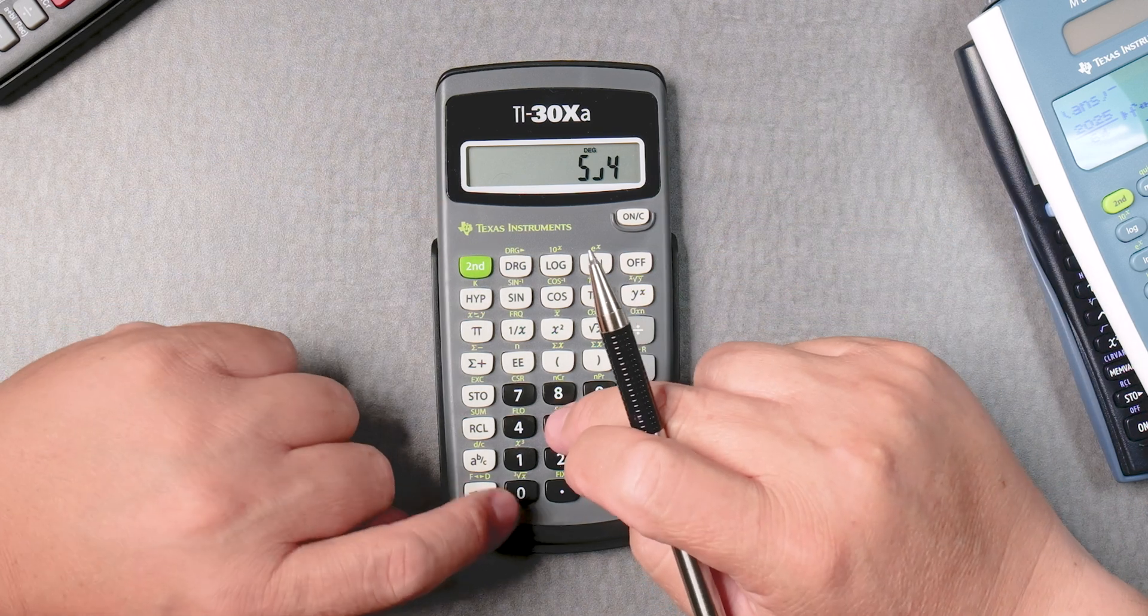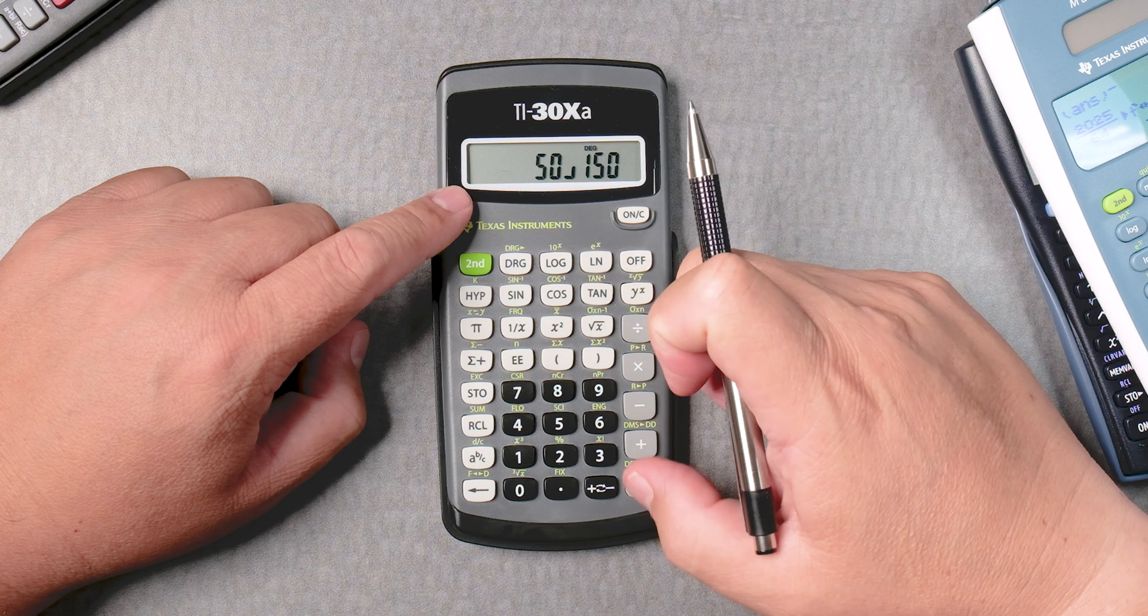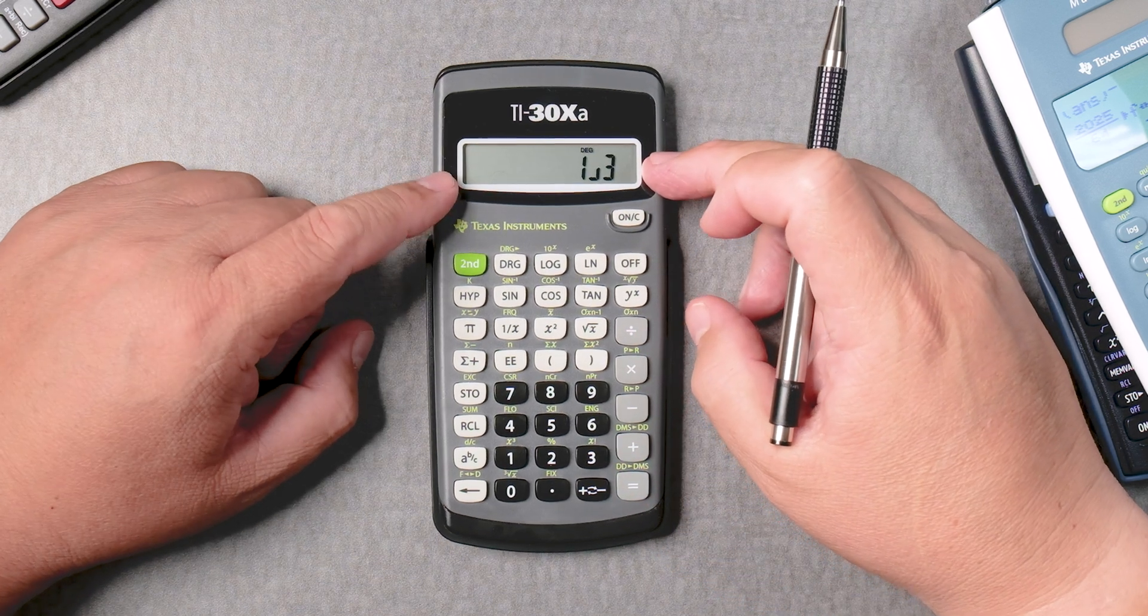Let's say I want to reduce 50 ABC 150. You just press equals and it reduces this fraction automatically.